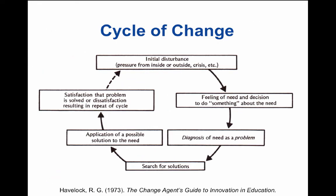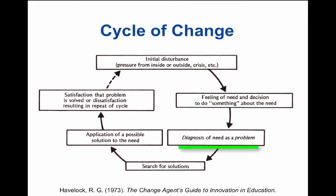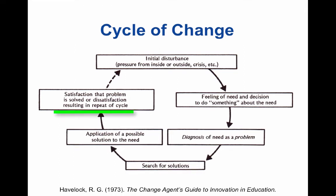The cycle of change created by Ronald Havelock in the Change Agent's Guide to Innovation and Education looked like this. We have some kind of initial disturbance or pressure from the inside or outside, or a crisis. Next was the feeling of need and decision to do something about it. Then the diagnosis of the need as a problem, followed by a search for a solution. Then the application of a possible solution to the need. And then satisfaction that the problem is resolved, or dissatisfaction resulting in the repeat of the cycle.